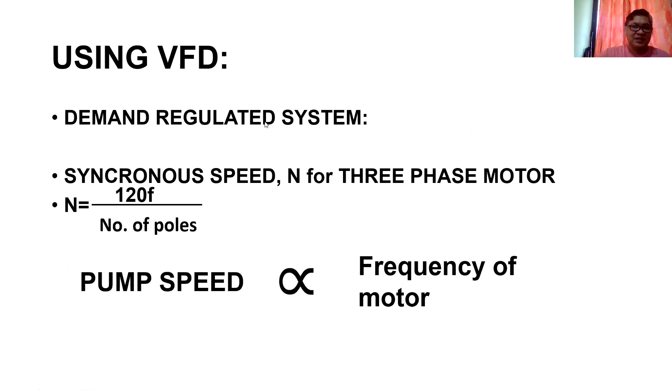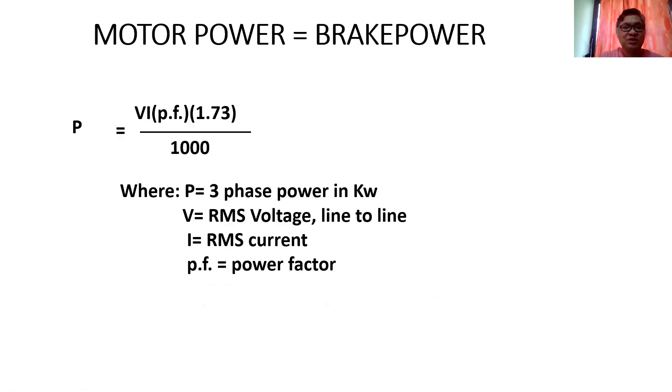Using VFD, we have what we call a demand regulated system. In pumping, we would like to have a constant pressure in our pumping system using VFD and transmitters. The speed is equivalent to N equals 120 times the frequency divided by the number of poles. For a three-phase motor, the number of poles is normally four. Pump speed therefore is directly proportional to the frequency of motor.